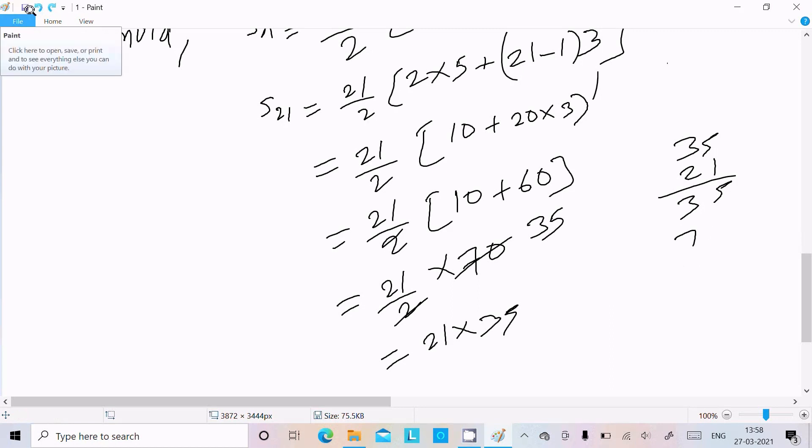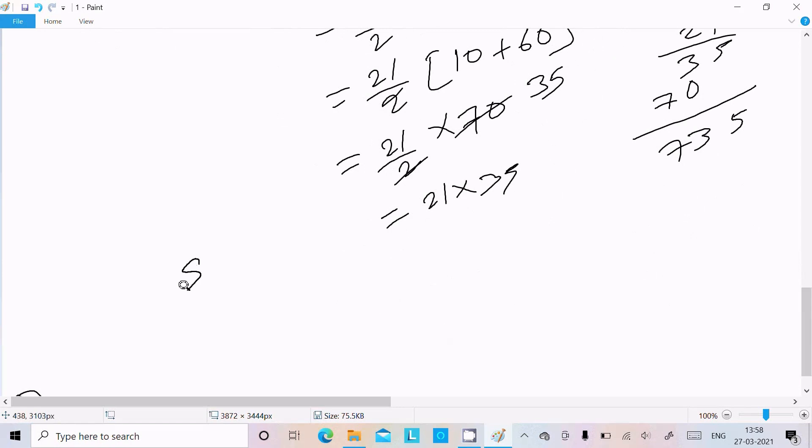Doing the multiplication, 21×35 = 735. So the sum of 21 terms equals 735.